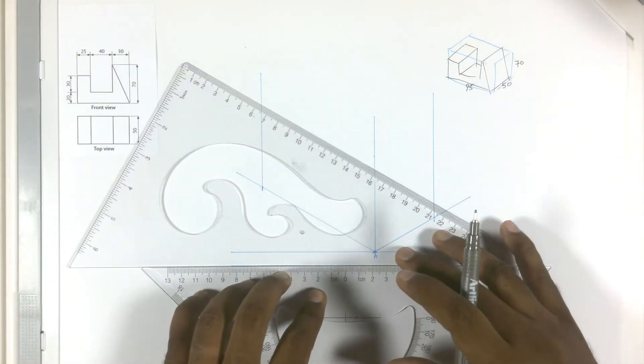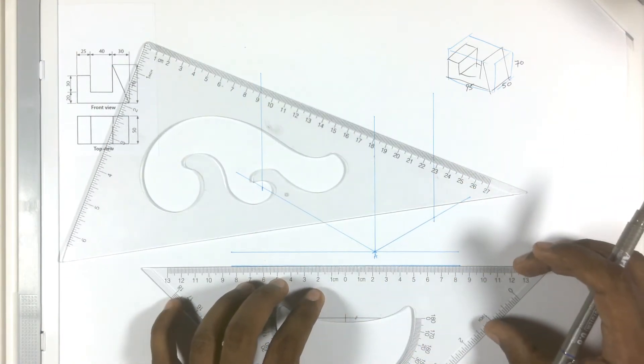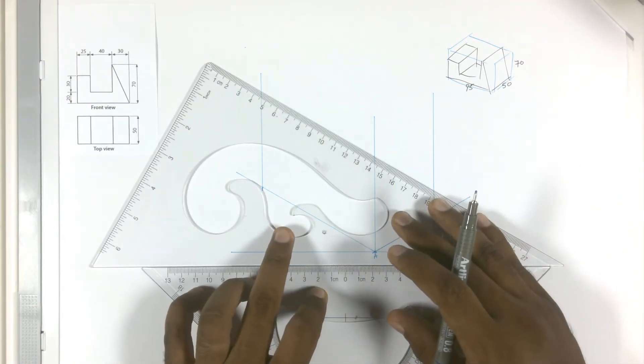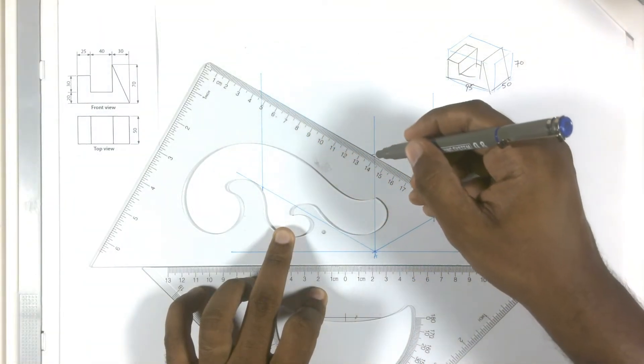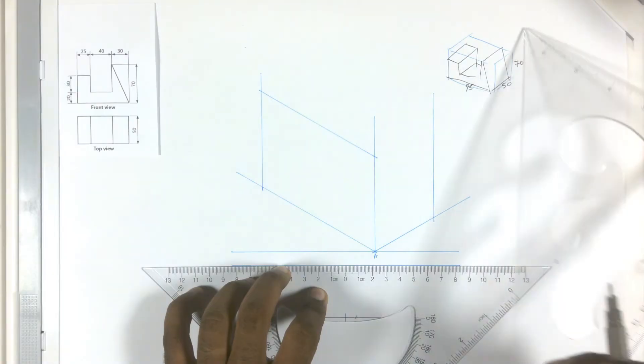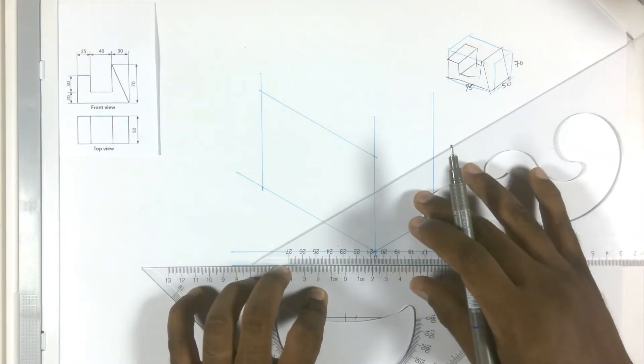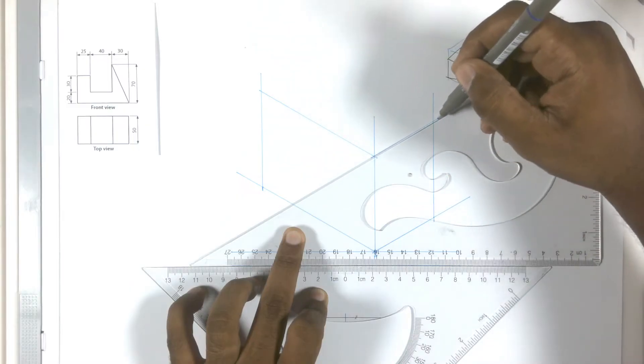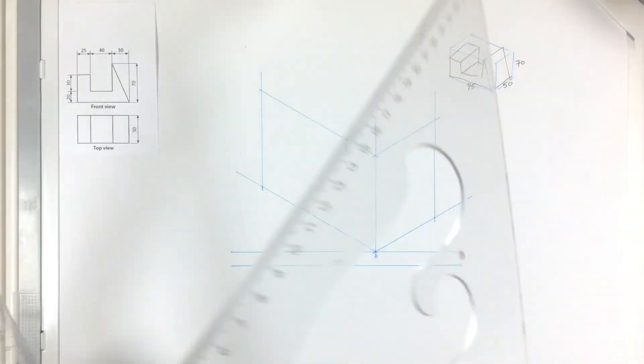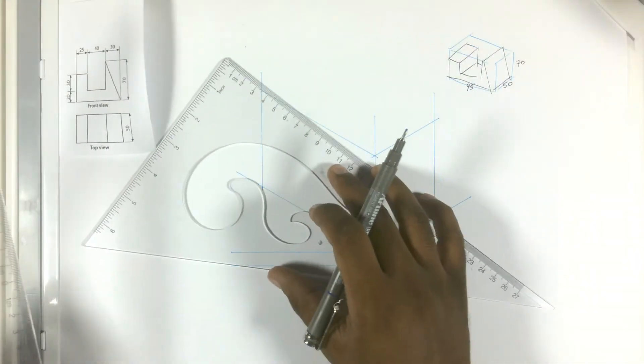Make sure that your ruler is straight on the line. Move this ruler and draw your line. Rotate your ruler and do the same for the other side. Draw a line. Same technique as I taught in the last video.